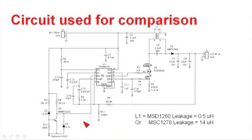We're going to take a look at two different approaches for this coupled inductor. In the first case, we operate this circuit with a low leakage inductance inductor — the MSD1260 by Coilcraft, which for 47 microhenry magnetizing inductance has only about half a microhenry of leakage inductance. The second case is the MSC1278, also from Coilcraft, which is almost identical with very similar on-resistances and core areas, but wound completely differently and has a significant amount of leakage inductance — 14 microhenry, which is almost 30% of the magnetizing inductance.